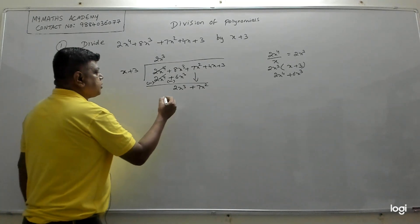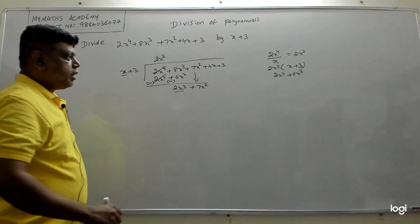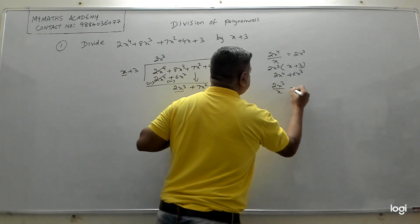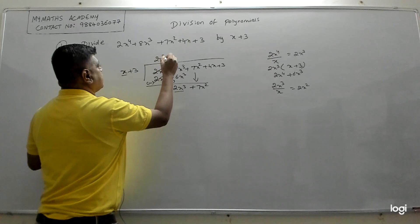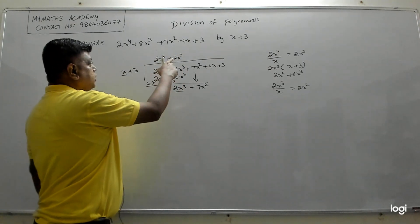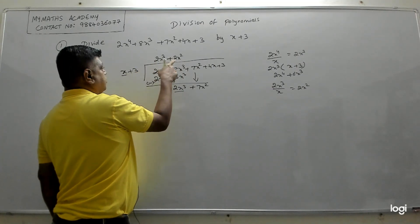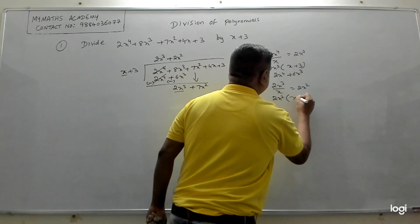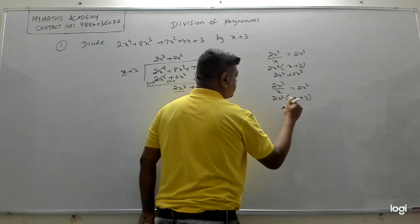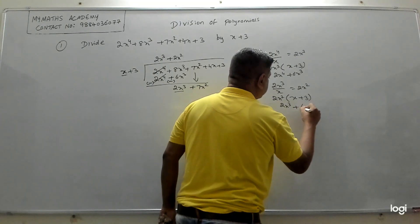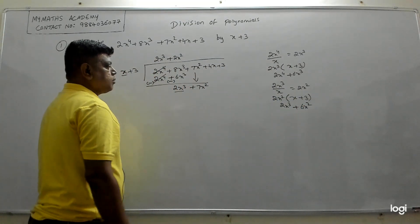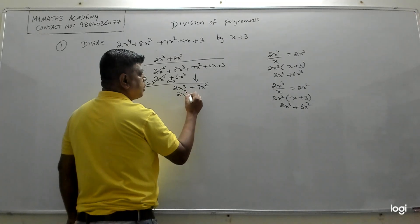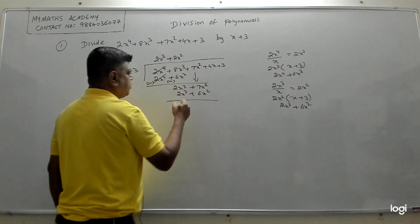Again take the first term of this remainder by the first term of the divisor. So 2x³ ÷ x = 2x². Put that +2x² in the quotient. Then multiply 2x² by the entire divisor x + 3: 2x² × x = 2x³, and 2x² × 3 = 6x².